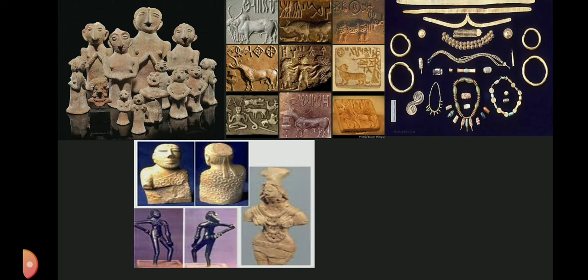The seals bear a great variety of motifs, most often animals including the bull with or without a hump, the elephant, tiger, and goat, as well as monsters. The most remarkable seal is generally identified as the Pashupati seal, which depicts a human figure seated cross-legged and surrounded by animals like elephant, tiger, rhinoceros and buffalo.